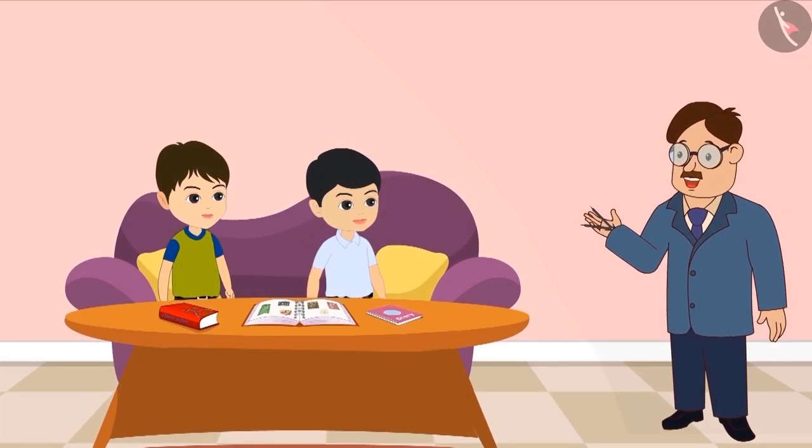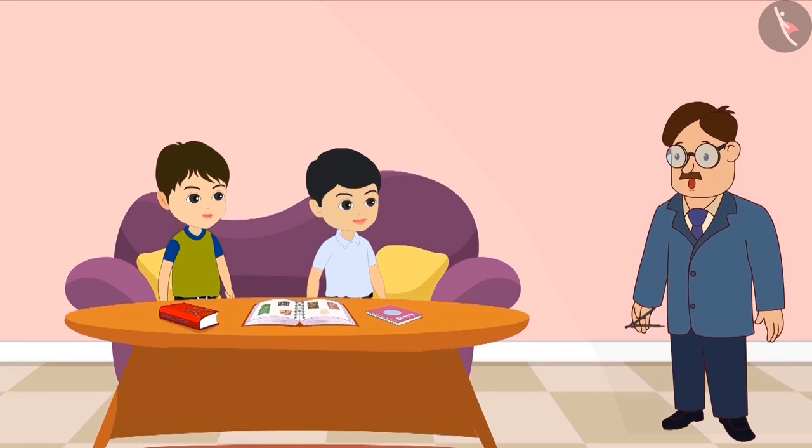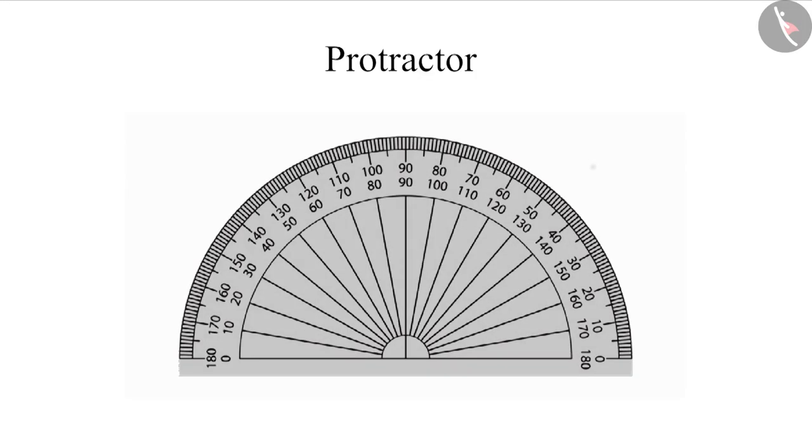Did you see children? With the help of this protractor, we can easily measure any angle. In your geometry box, you will find a protractor. It has numbers from 0 to 180 on both sides, from right to left and left to right.